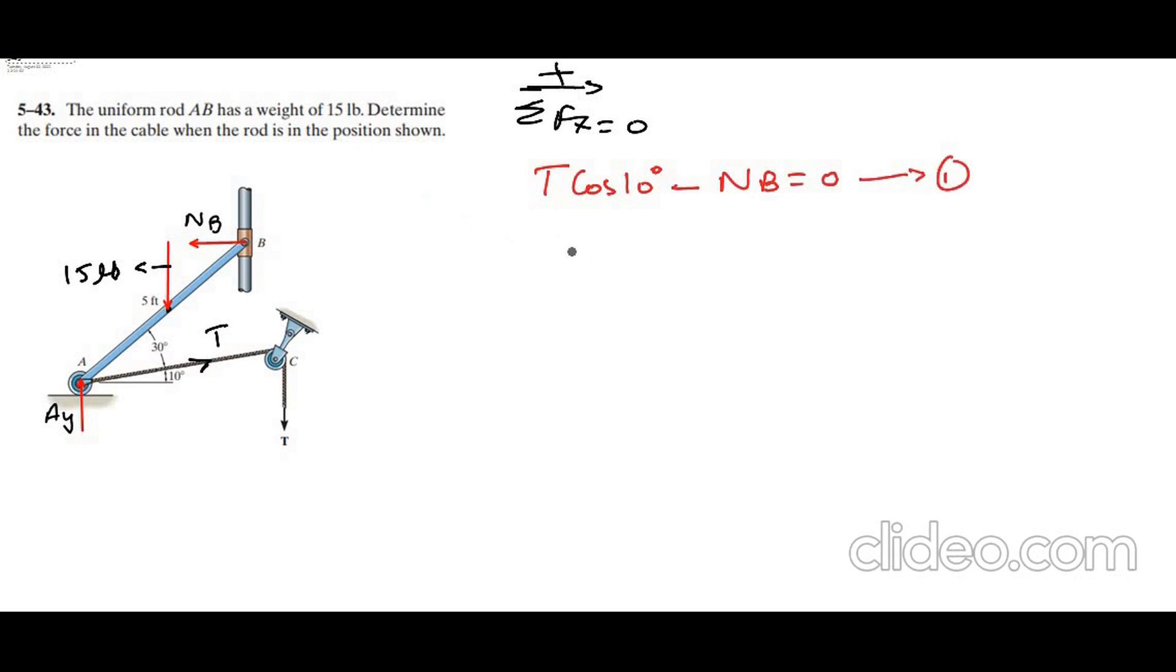I have to use another equation. Let's say sum of the forces in y direction equals to 0. I am considering upside as positive. So I have Ay minus 15 plus T sin 10 degrees, the vertical component of this tension force equals to 0. Let's call this equation 2.